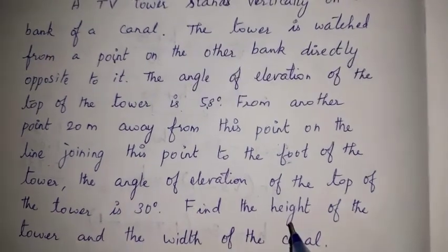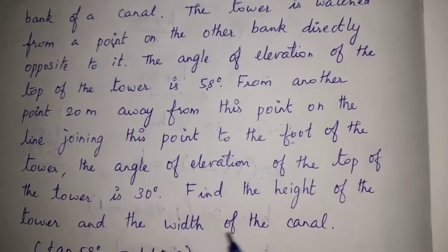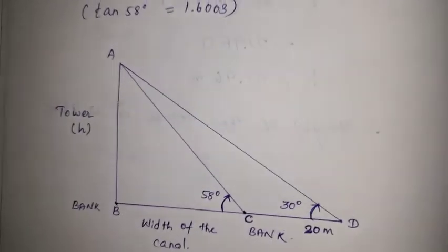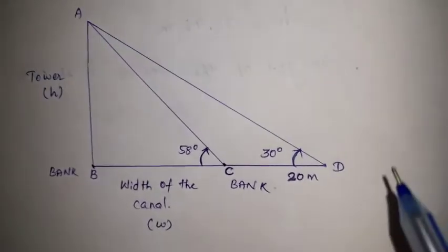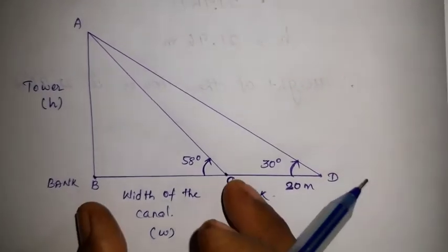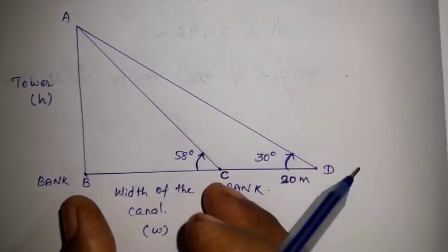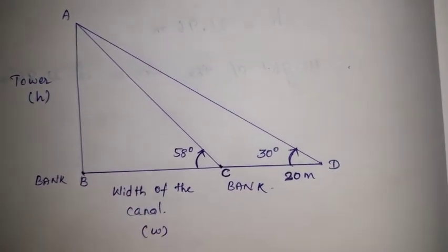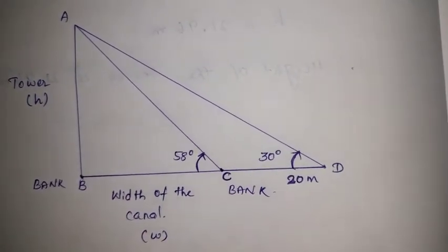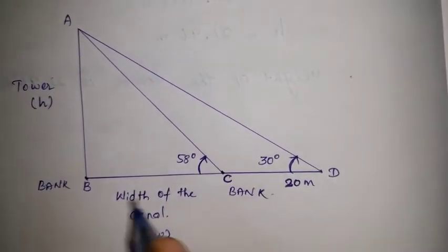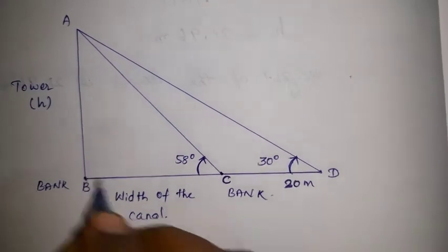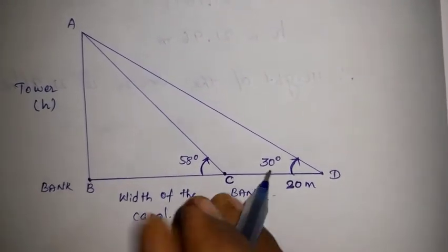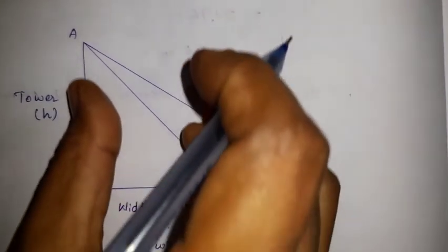Let's find the height of the tower and width of the canal. The width of the canal is called W, and the width of the canal is BC. Here, BC is the width of the canal.